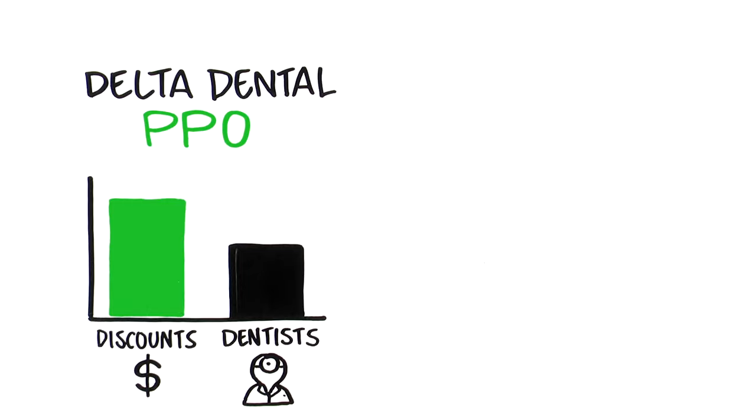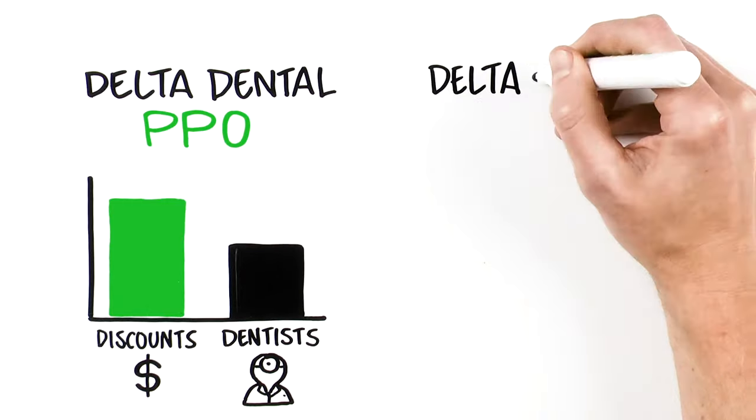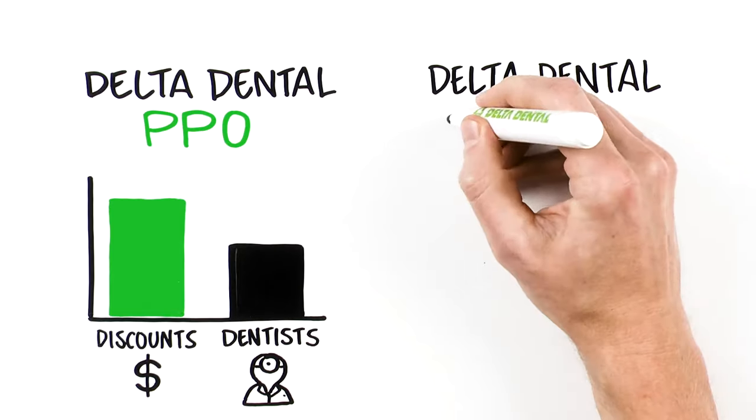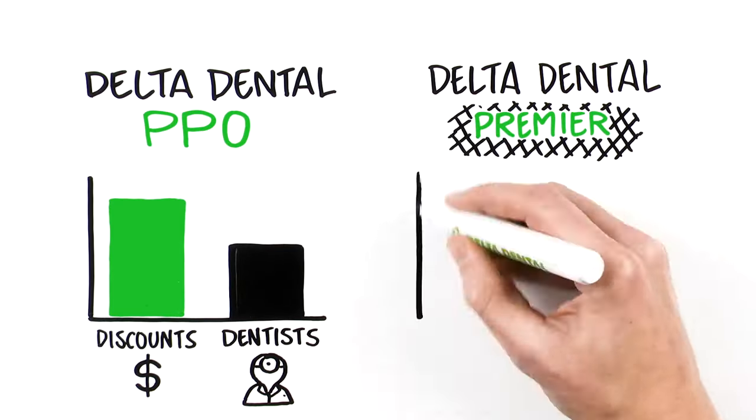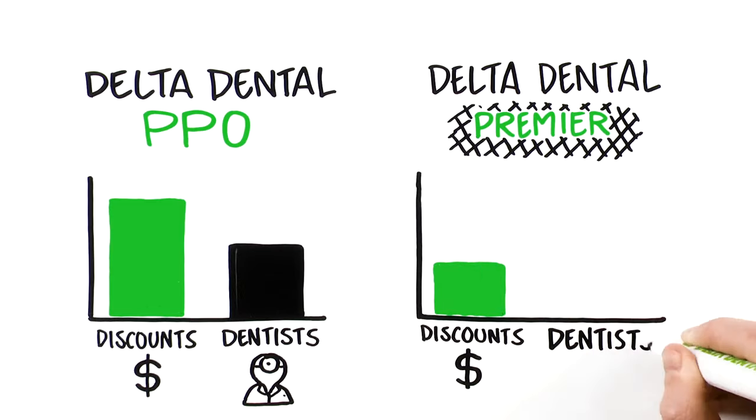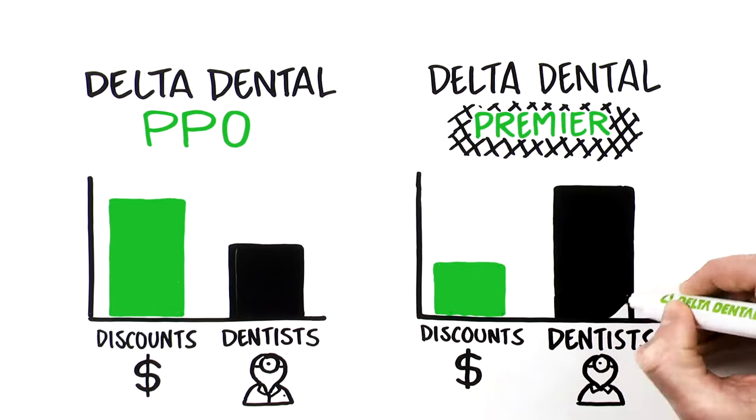But what happens when your dentist does not belong to the Delta Dental PPO network? That's where the Delta Dental Premier network comes in. It serves as a safety net, allowing subscribers to visit their dentist of choice and still save money.